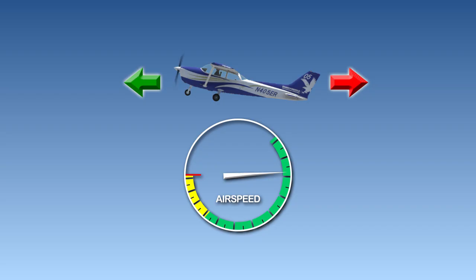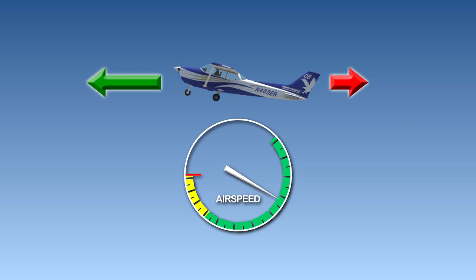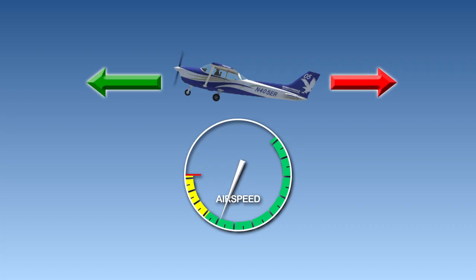Although both airspeed and angle of attack control the aircraft's lift, in straight and level flight the throttle is primarily used to maintain a desired airspeed, and the elevator is used to control the altitude. In normal cruise flight, when an aircraft is maintaining a constant airspeed, thrust and drag are equal. If the pilot increases engine output via the throttle, the engine and propeller will spin faster and generate more thrust, accelerating the aircraft. As the aircraft accelerates, more drag will be created, and eventually drag will equalize with thrust, and the aircraft will stabilize at its new cruise airspeed.